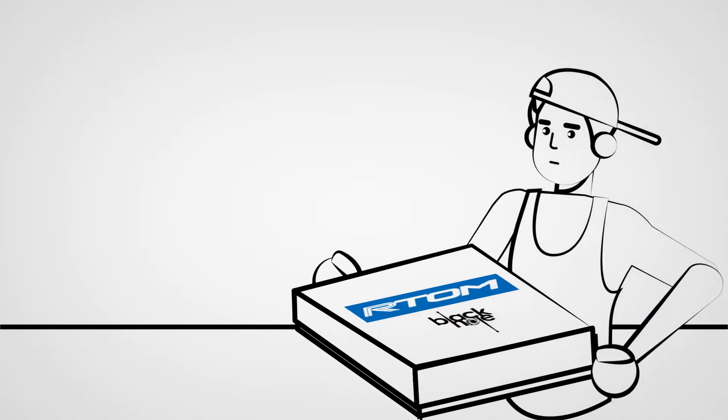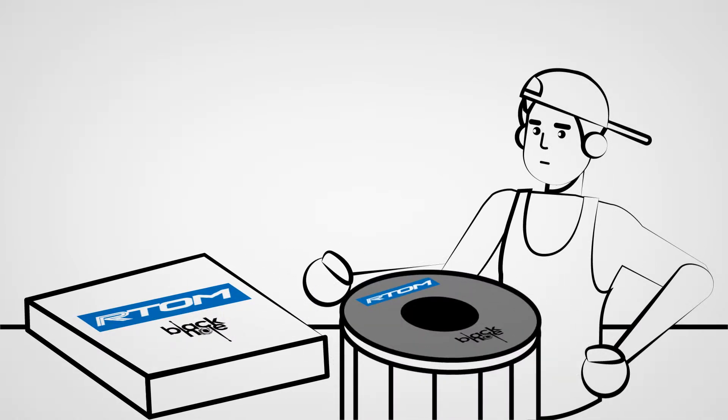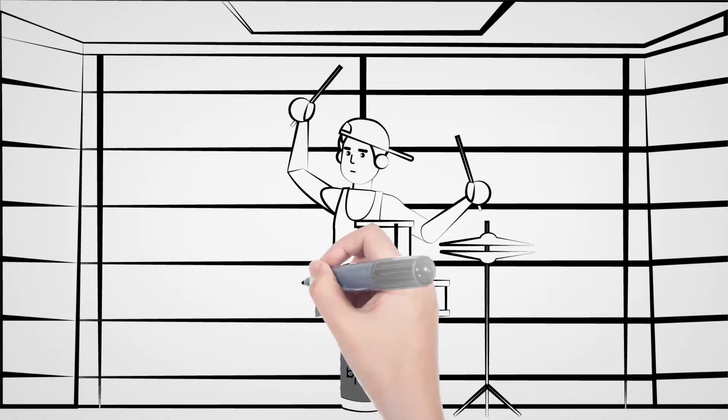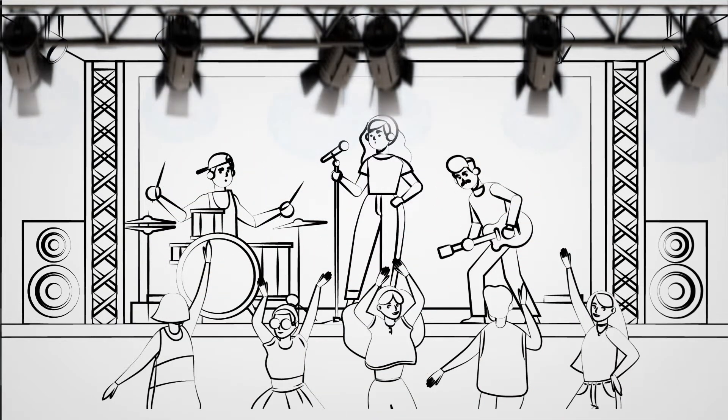Meet the Black Hole Practice System, a revolutionary practice system that easily snaps onto your existing heads and lowers the volume of your drums up to 80%. Now Bob's neighbors are happy and his wife totally supports his drumming dreams.